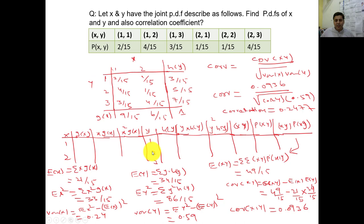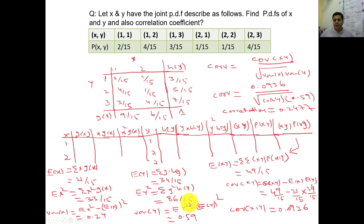For y, we have values 1, 2, 3 with probabilities 3/15, 5/15, and 7/15. E(y) = summation of y·h(y) = 1×(3/15) + 2×(5/15) + 3×(7/15) = 34/15. E(y²) = summation of y²·h(y) = 1²×(3/15) + 2²×(5/15) + 3²×(7/15) = 86/15. Therefore, variance of y = 86/15 − (34/15)² = 0.59.